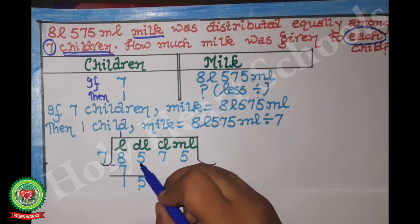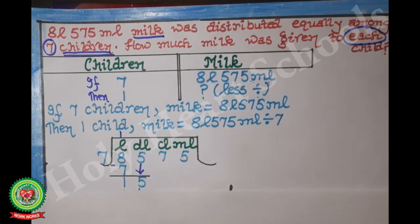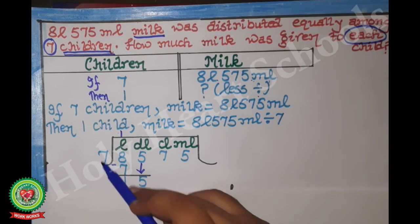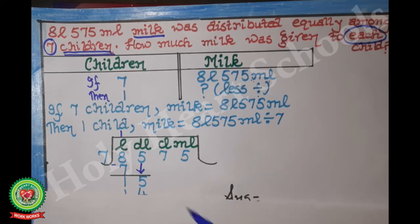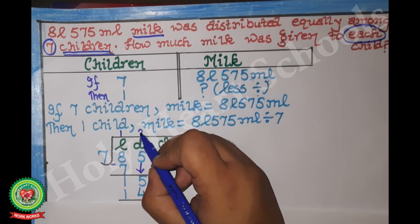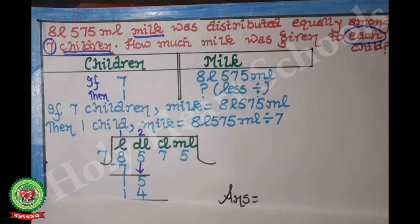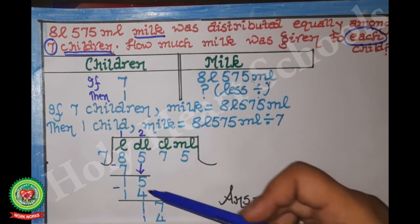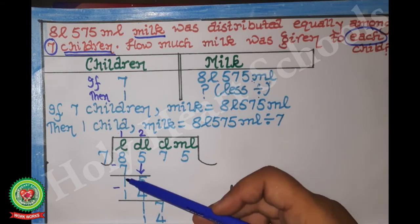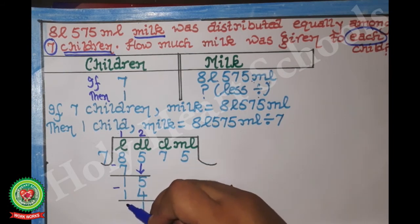Bring 5 down to get 15. On the 7 table, 15 doesn't come exactly; the number less than 15 is 14. 7 × 2 = 14. After subtracting: 15 minus 14 = 1, then 1 minus 1 = 0.